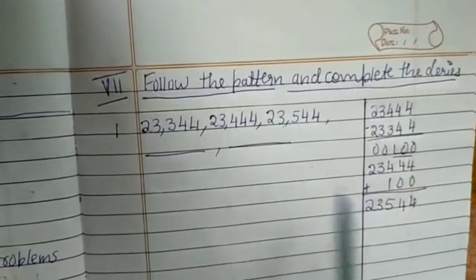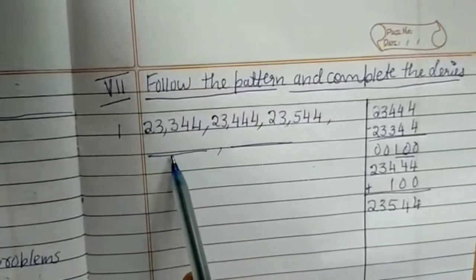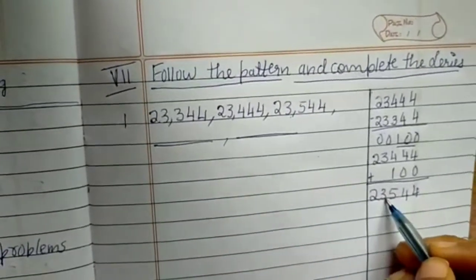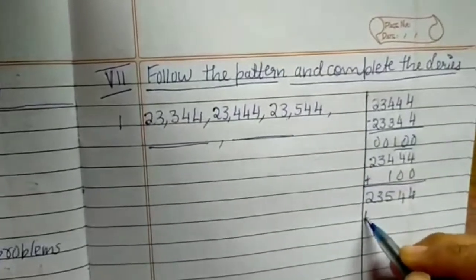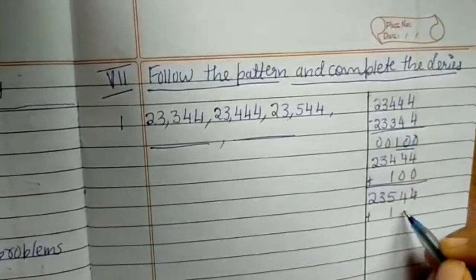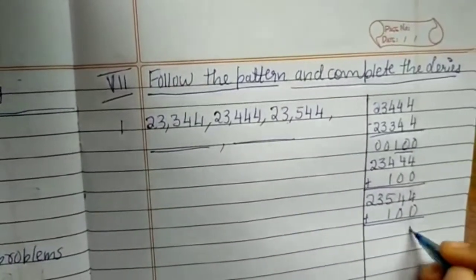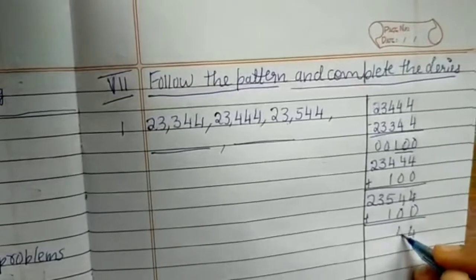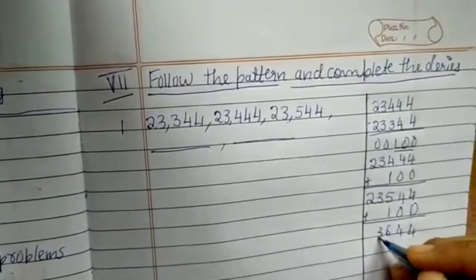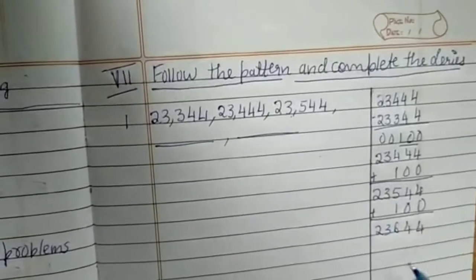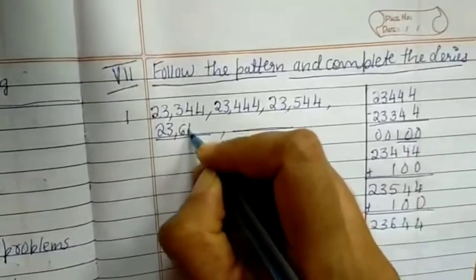So we got the answer. Now let's find out the next blank. 23,544 plus 100. So 4 plus 0 is 4, 4 plus 0 is 4, 5 plus 1 is 6, 3 as it is and 2 as it is. So we got the answer: it is 23,644.